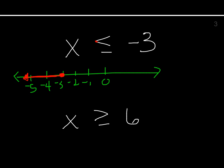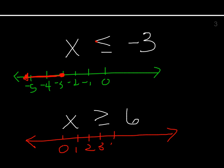Now let's look at the next one: x is greater than or equal to 6. Draw the number line, putting 0 on the left side since we're going up to 6, and marking 1, 2, 3, 4, 5, 6, 7, 8.